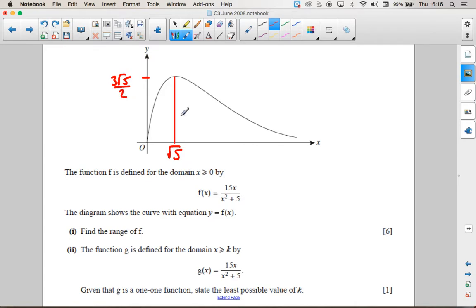And part 2 says the function g is given by this here for some domain x, where x is more than or equal to k, that makes a one-to-one function.